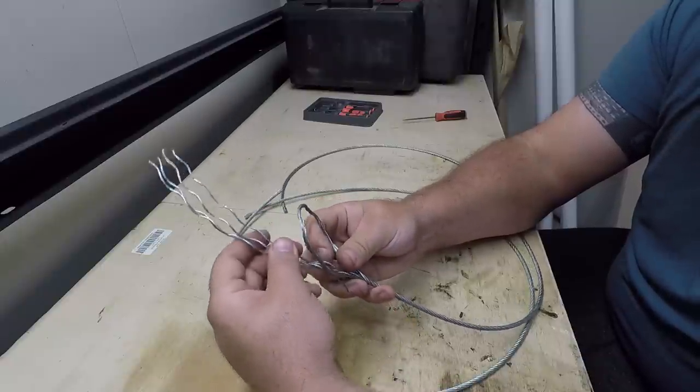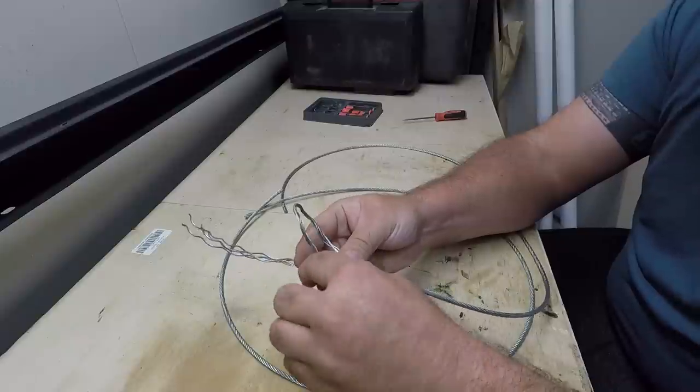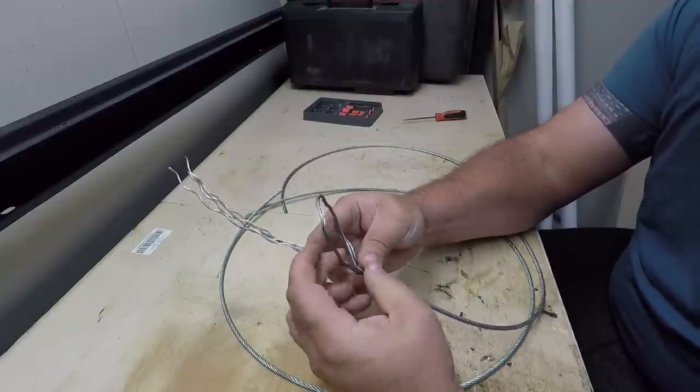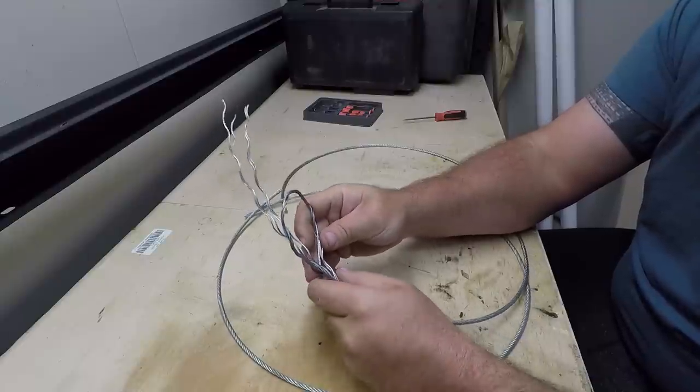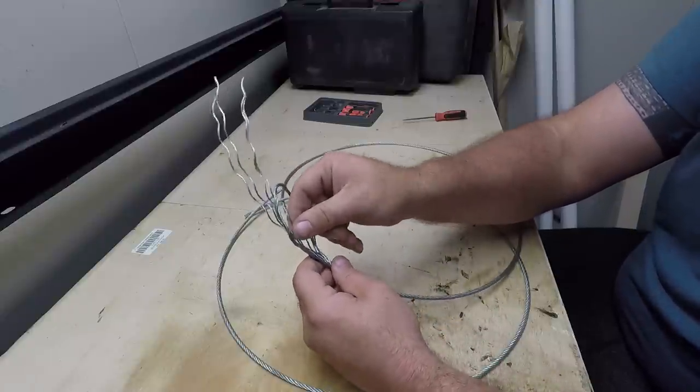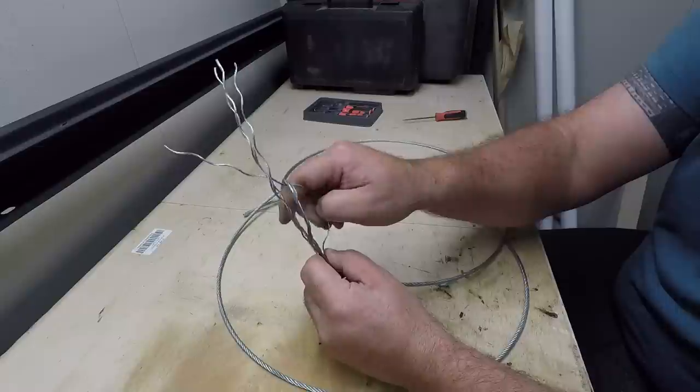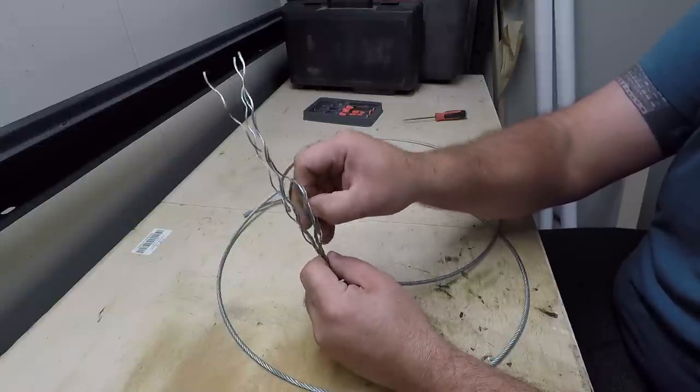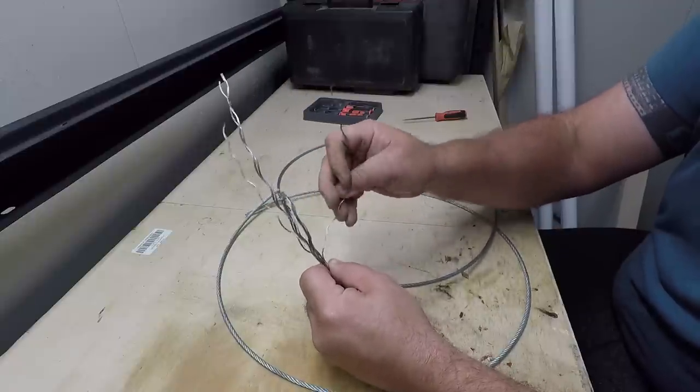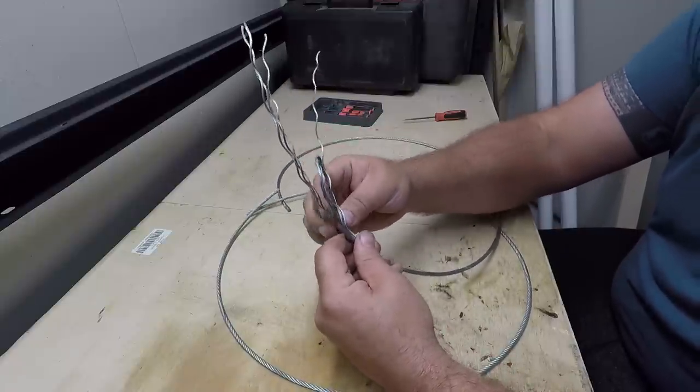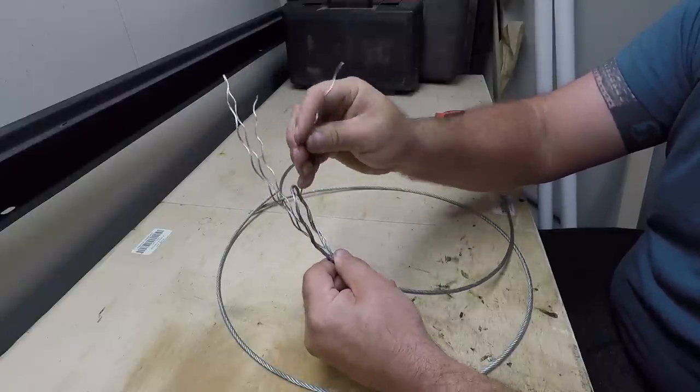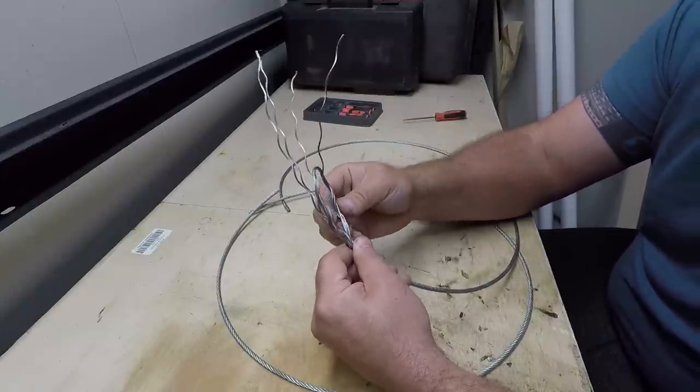In case you're wondering, this is a better alternative to just looping the cable back on itself and throwing clamps on it. Cable clamps have about an 80% holding power, 80% efficiency on your wire rope, whereas a Flemish eye is about 90%. Sometimes that extra 10% makes a difference. We got our core back down there, we're just gonna keep rolling around it here.